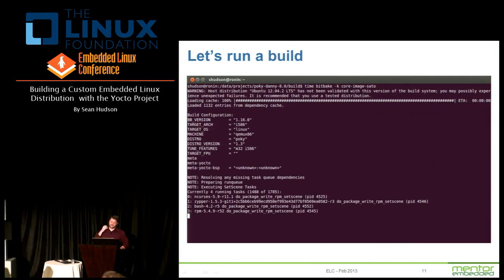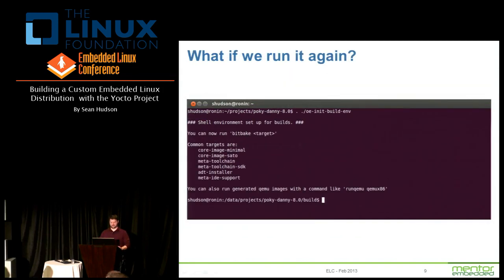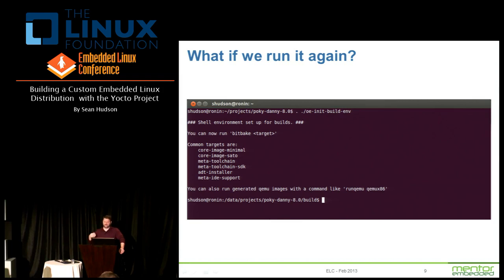Let's go ahead and run a build. I actually ran a Sato build. Core-image-minimal is just a very minimal build. Core-image-sato is an example UI based off of the GNOME UI. It's an extremely useful image to build because it touches a lot of different packages and recipes. An initial build is dependent on the speed of your machine and the speed of your network connection.